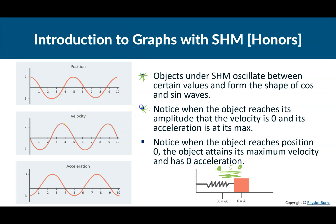Notice when the object reaches amplitude that the velocity is zero and acceleration is at its maximum. At time equals zero, it is at its amplitude. When it's stretched out as much as possible or compressed as much as possible, its velocity is zero — that's what we see on the velocity versus time graph. We should also know that the force and acceleration are at a maximum, and the acceleration is on the opposite side of where the position is.